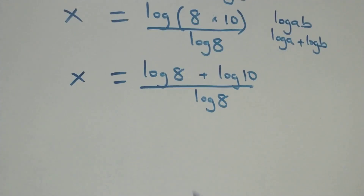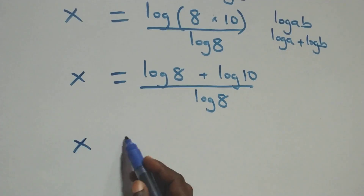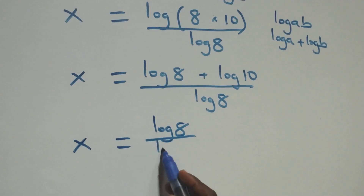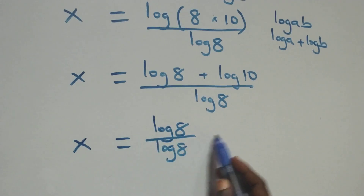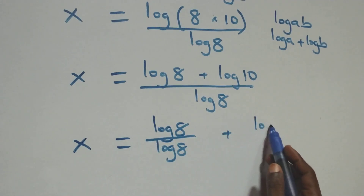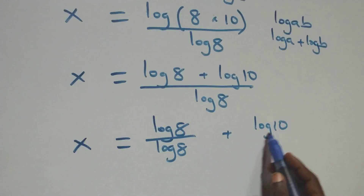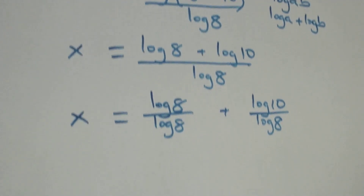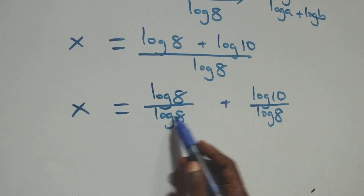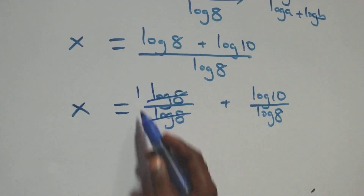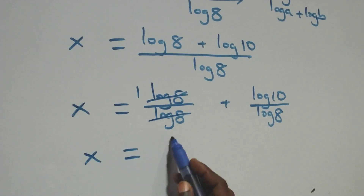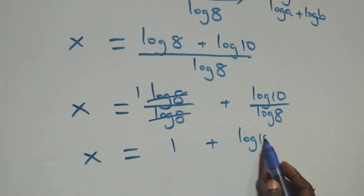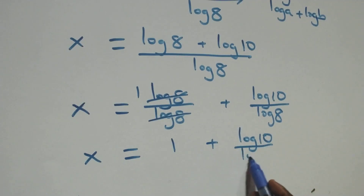Then we separate this into two fractions: x equals to log 8 over log 8, plus log 10 over log 8. For this first part, log 8 cancels and 1 is left, which implies x equals to 1 plus log 10 over log 8.